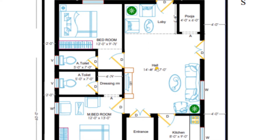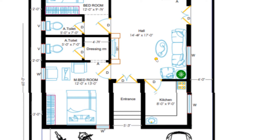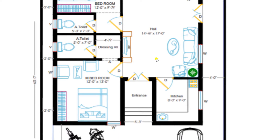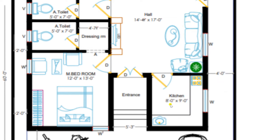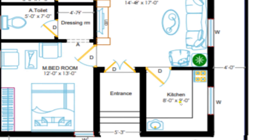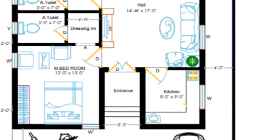Now from the hall I am moving to the kitchen room. On the right hand side a comfortable kitchen area is available of size 8 feet by 9 feet. On the platform you can view we have plotted a stove and a wash basin.